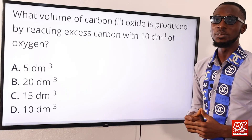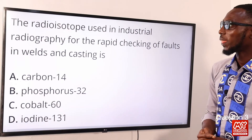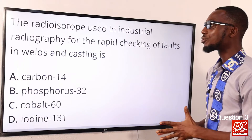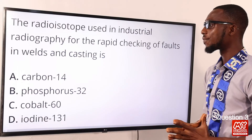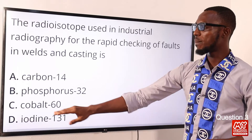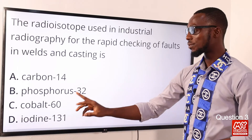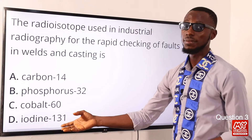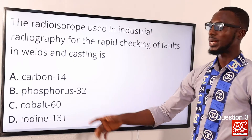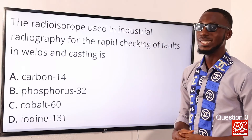Question three: the radio isotope used in industrial radiography for the rapid checking of faults in welds and castings is what? It is Cobalt-60. When we point to iodine and phosphorus, we are talking about treatment of cancer of the thyroid gland and leukemia. So the correct option is option C for Cobalt-60.